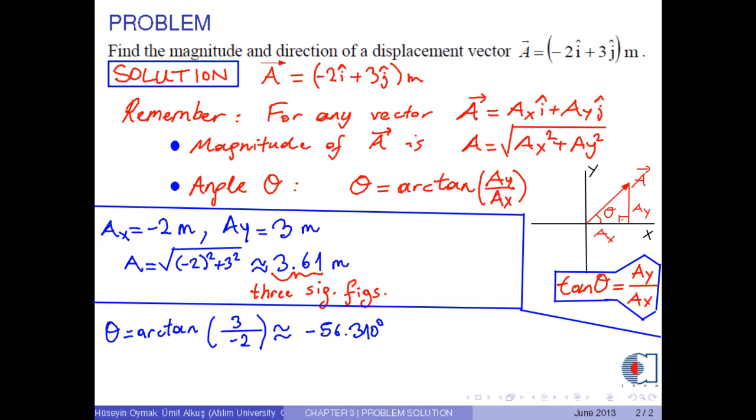However, because vector a is in the second quadrant, we add 180 degrees to this result.